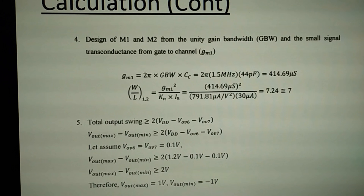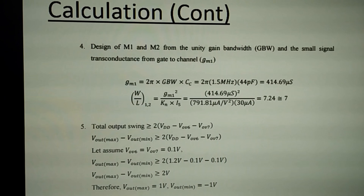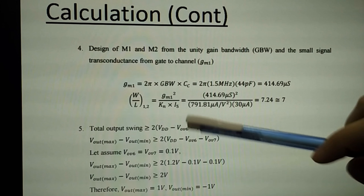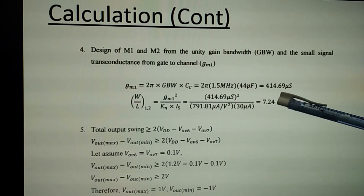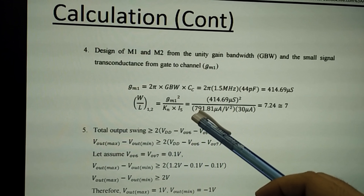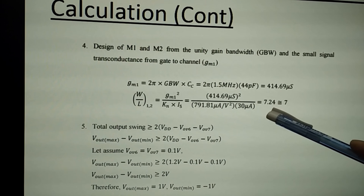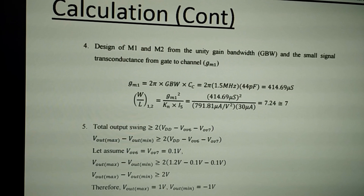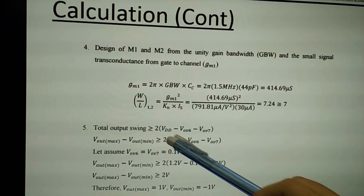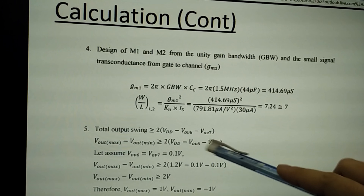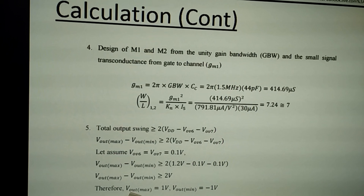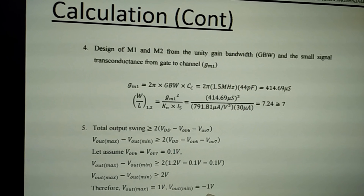M1 and M2 are designed from the unity gain bandwidth and the small-signal transconductance from gate to channel. From the equation, we get GM1 equal to 414.69 µS. The aspect ratio for M1 and M2 is 7.24, approximately 7. The total output swing is more than 2 times (VDD minus V_overdrive6 minus V_overdrive7), giving Vout_max equal to 1 V and Vout_min equal to negative 1 V.